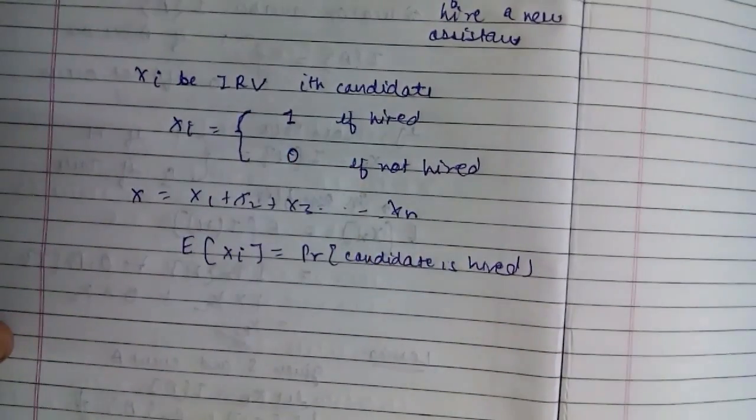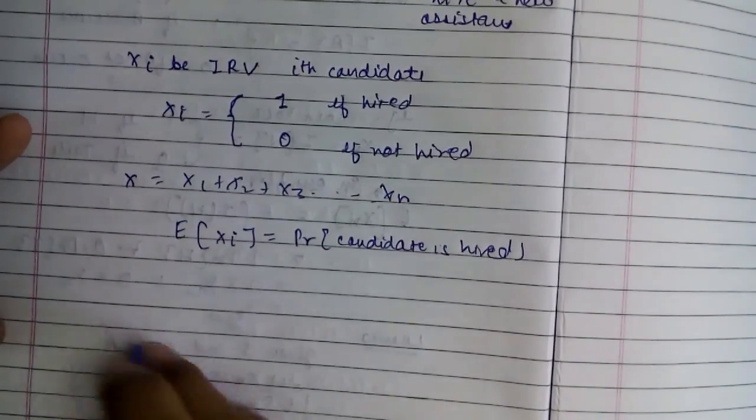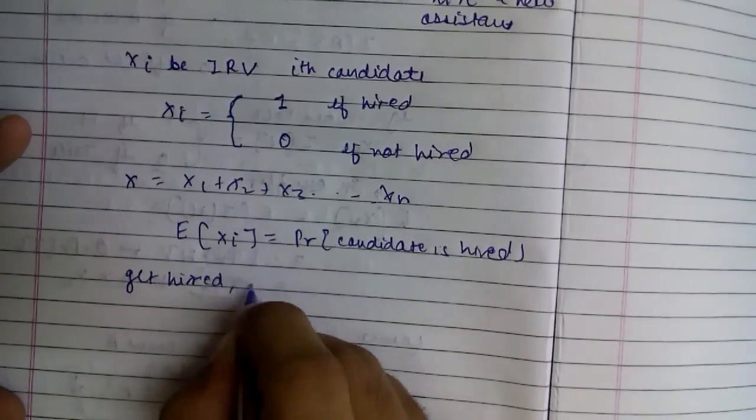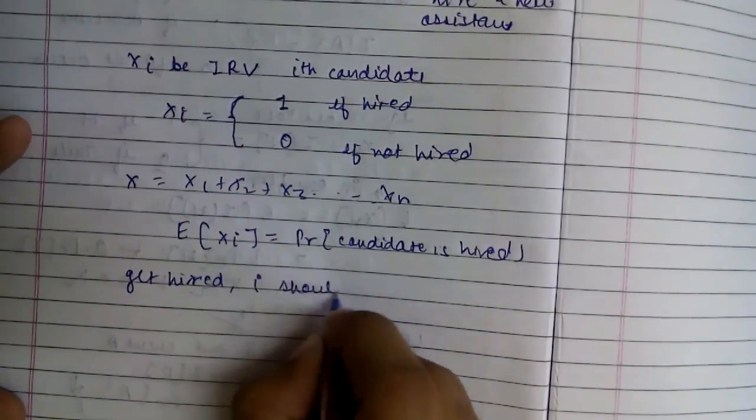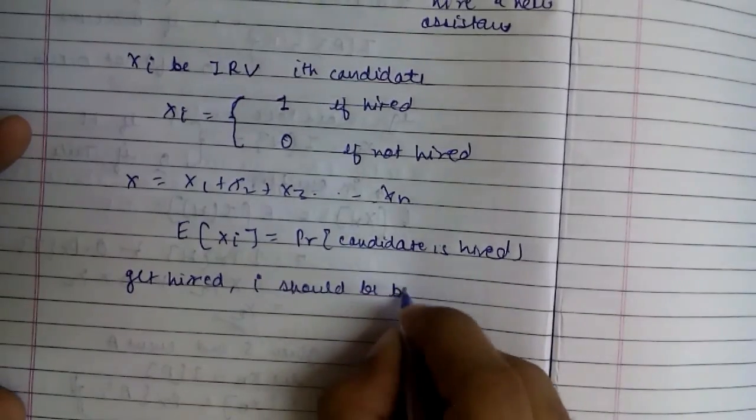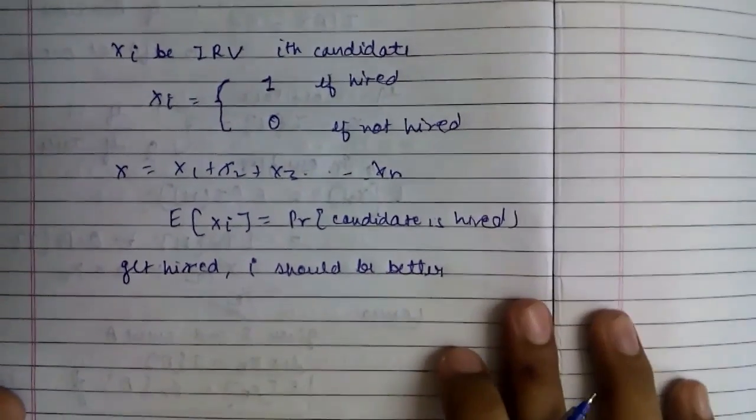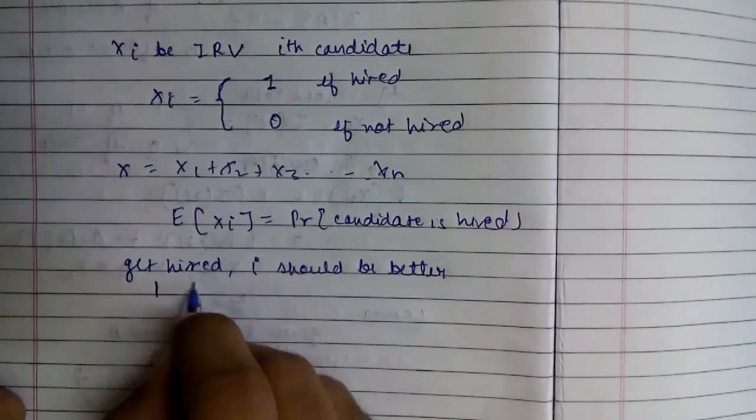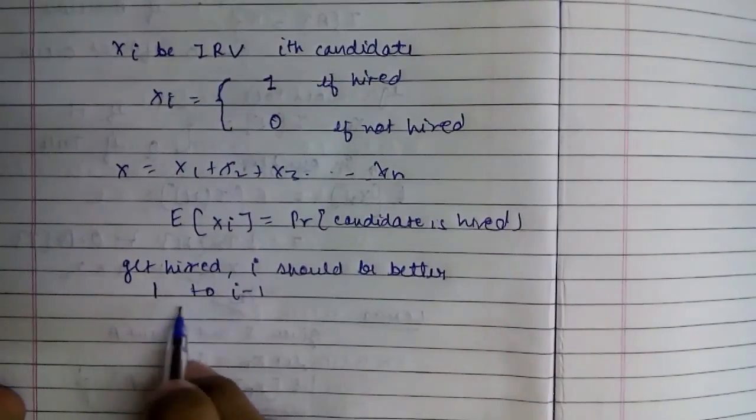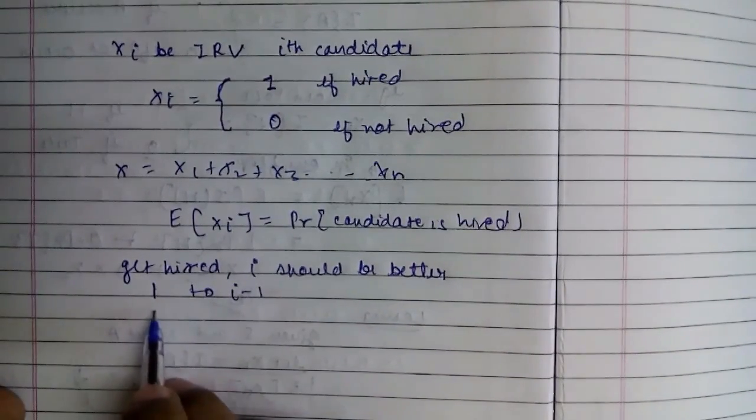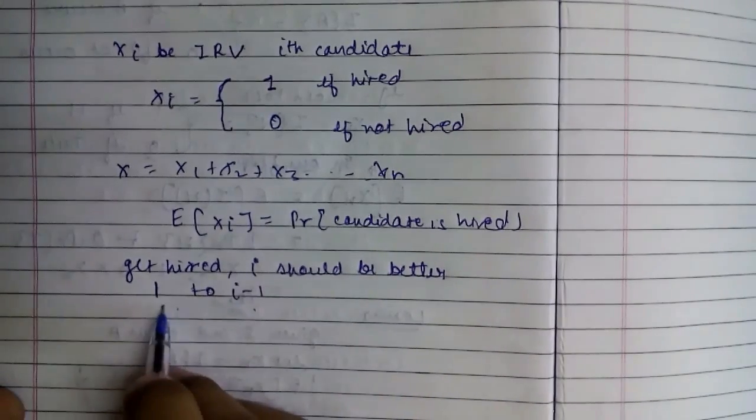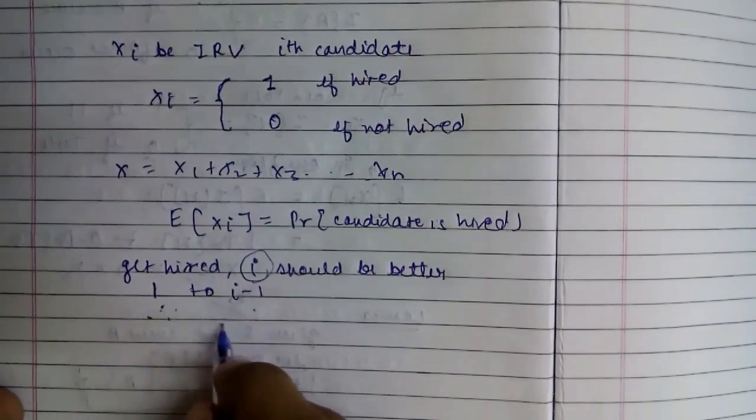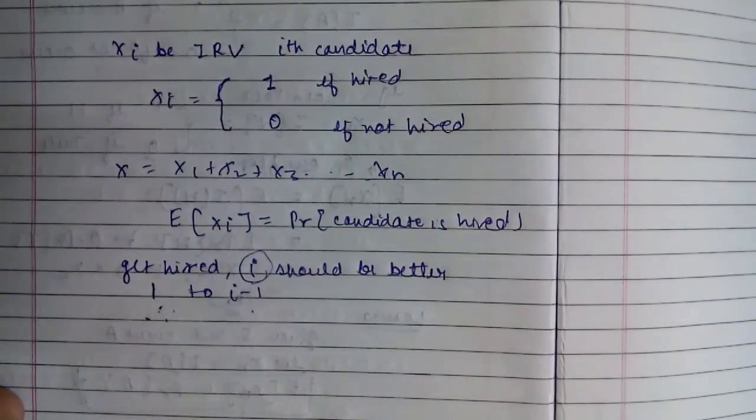So how does a candidate get hired? To get hired, candidate i should be better qualified, better than those who came from 1 to i-1, as our best will be between these. Every time we hire the best, so this one should be best among the ones that came before.